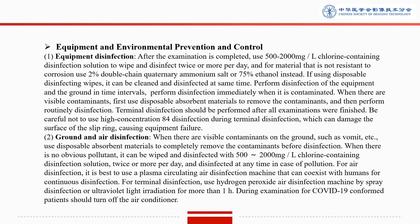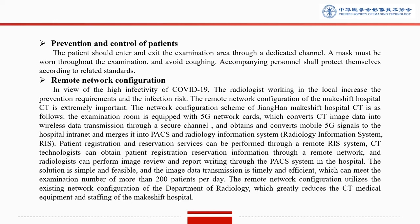For equipment and environmental prevention and control: perform disinfection of equipment at regular intervals, and disinfect immediately when contaminated. For the ground, when there are visible contaminants such as vomit, use disposable absorbent materials to completely remove the contaminants before disinfection. Use proper disinfection solutions twice or more per day, or disinfect at any time in case of contamination. When examining COVID-19 patients, the air conditioning should be turned off. Patients should have a dedicated access channel which is separated from the medical staff, and patients should wear masks throughout the entire examination process.